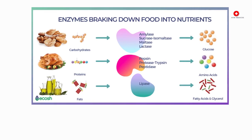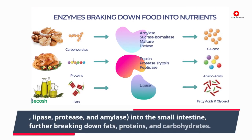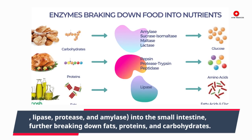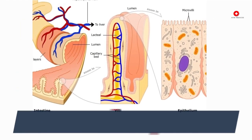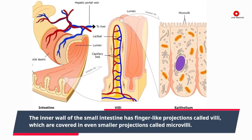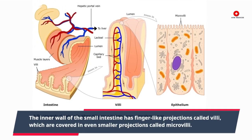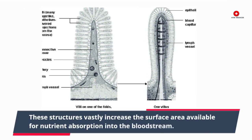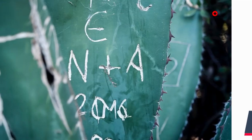The pancreas secretes digestive enzymes — e.g., lipase, protease, and amylase — into the small intestine, further breaking down fats, proteins, and carbohydrates. The inner wall of the small intestine has finger-like projections called villi, which are covered in even smaller projections called microvilli.